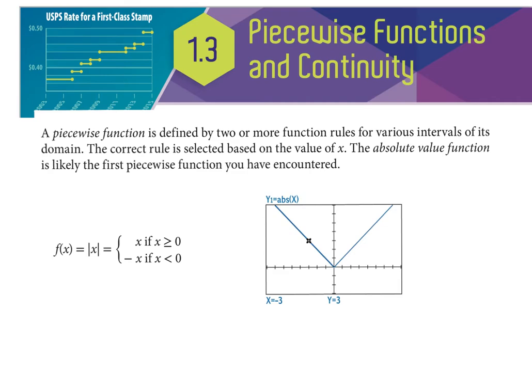We're looking at piecewise functions and continuity. They actually give you a type of piecewise function at the top — USPS rates for first class stamps. This is called a step function, and hopefully why it's called a step function is clear from that top left corner. Step functions are one type of piecewise function you'll see in real life.